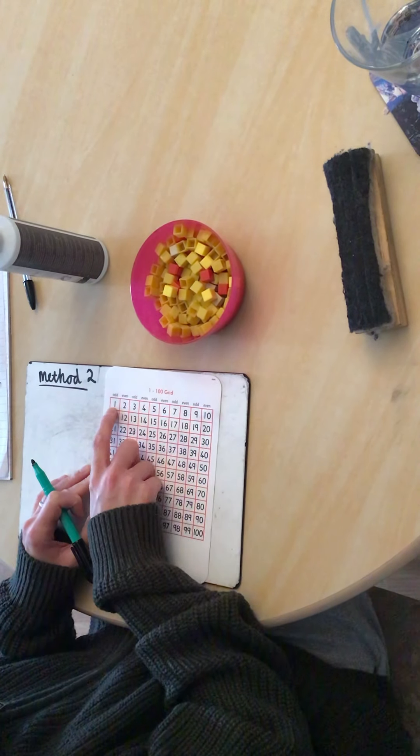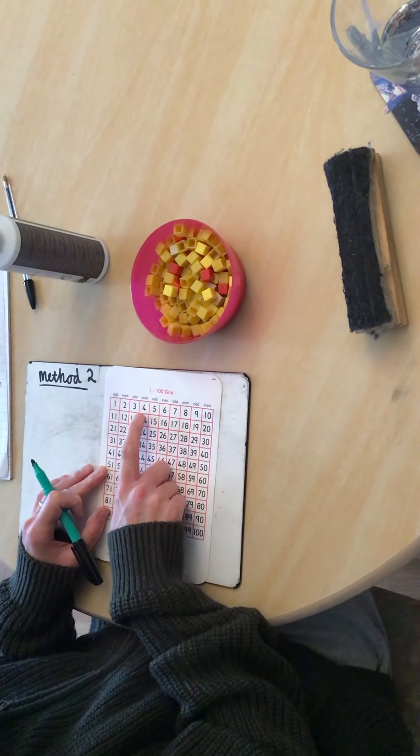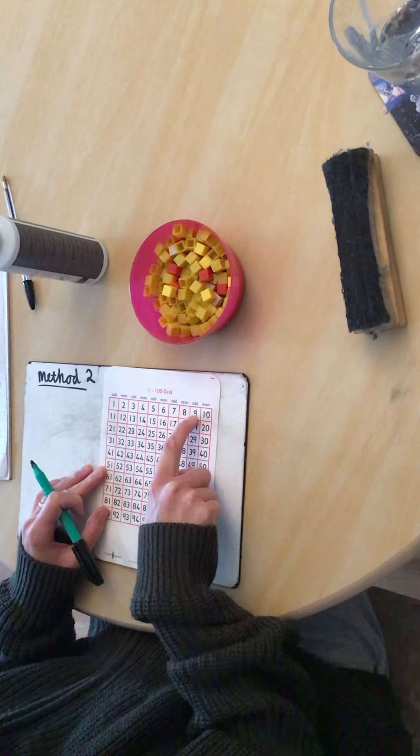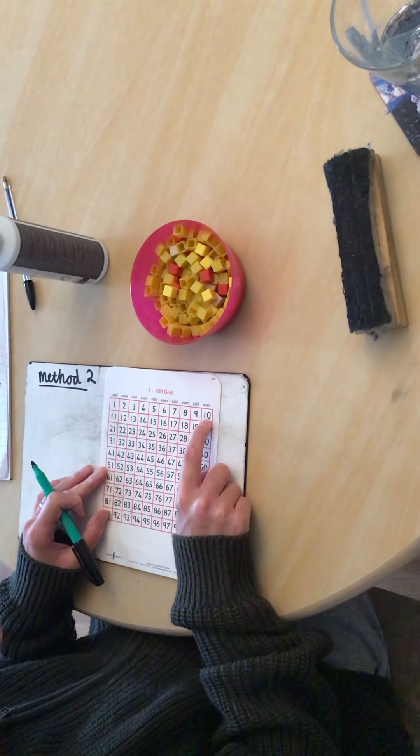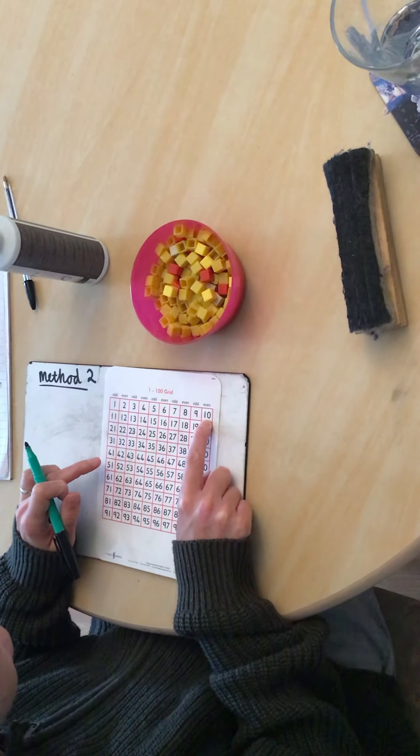Hey guys! So let's have a look at method 2. You'll see that in front of me I have a hundred square. Now a hundred square is when we have numbers that start at 1 and they go all the way to 100. And you'll see that they have 10 going across. So we have 1, 2, 3...